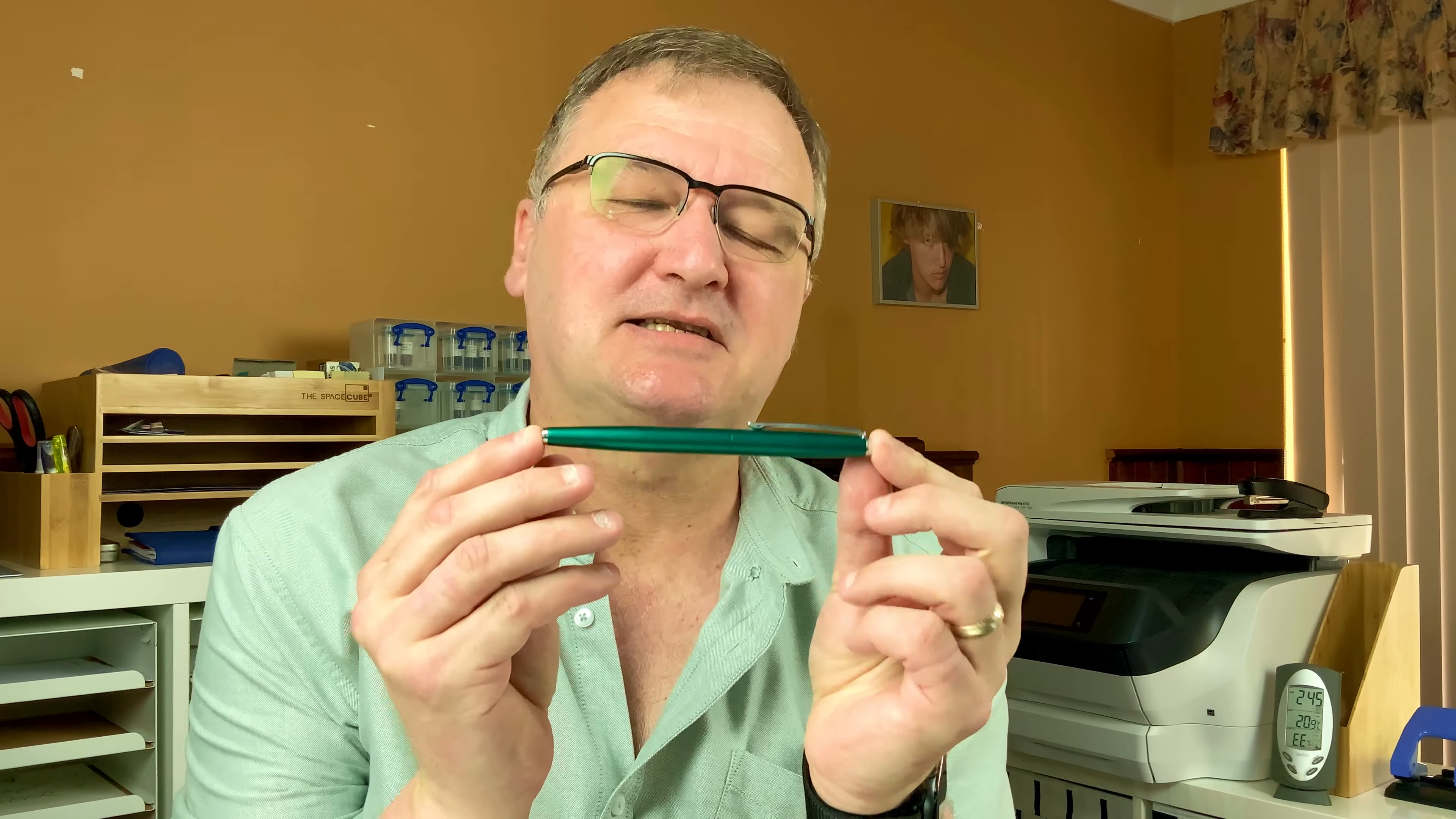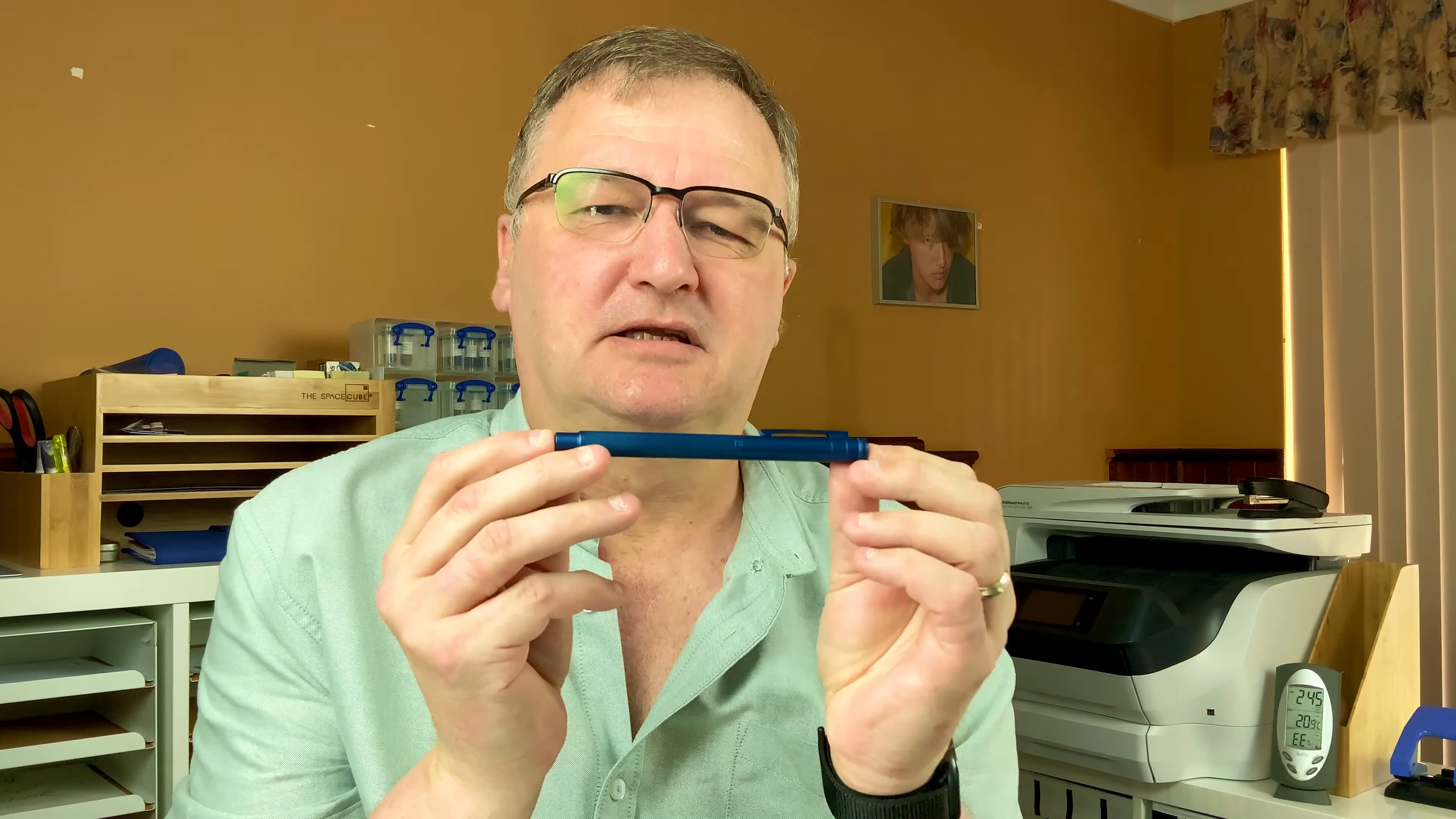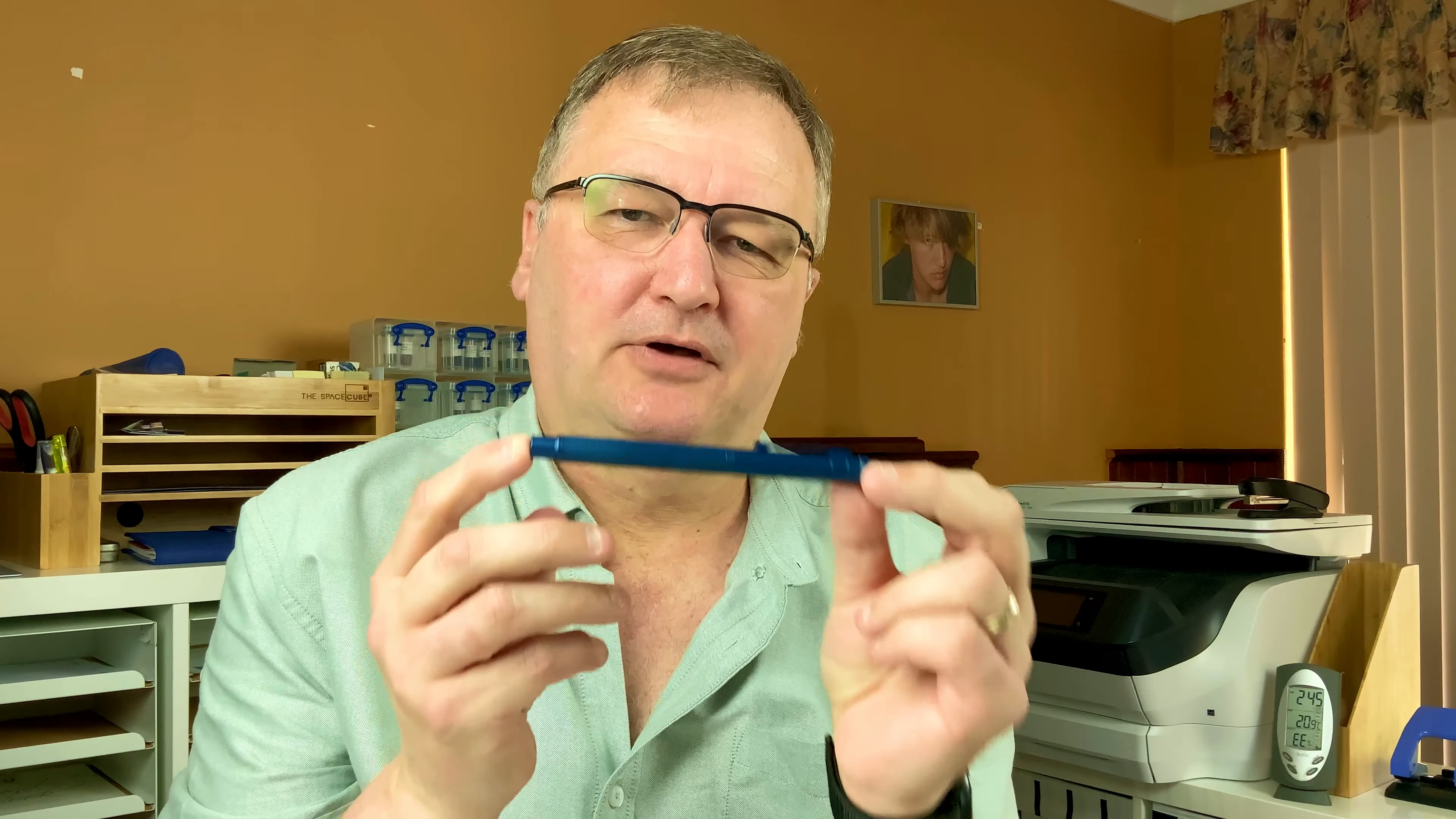The first pen, this lovely green, this is the Hongdian 525. Our second pen, this beautiful blue pen, this is the Hongdian Black Forest series The Light of Hope. Join me down on the mat and we'll talk through these two pens and compare them and see which one comes out the winner.